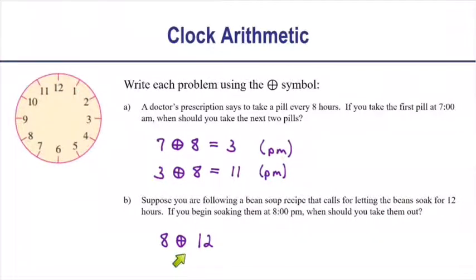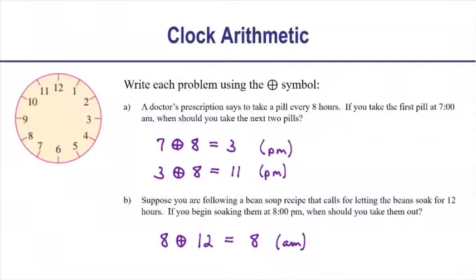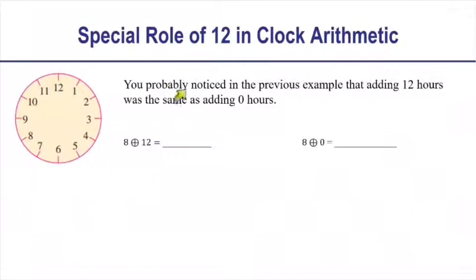So 8 circle-plus 12 is still 8, but this time it's 8 a.m. As far as the answer is concerned, 8 circle-plus 12 is just 8 — it doesn't really matter whether it's a.m. or p.m. You probably noticed that adding 12 hours puts us in the same position as adding 0 hours: 8 circle-plus 12 is 8, and 8 circle-plus 0 is also 8. So in addition mod 12, adding 12 and adding 0 both have the same effect.